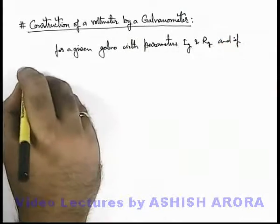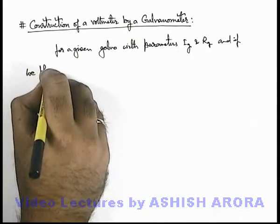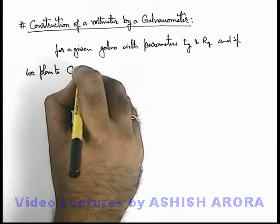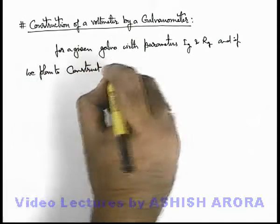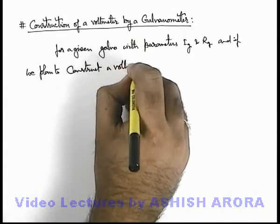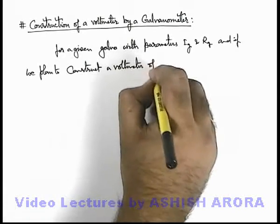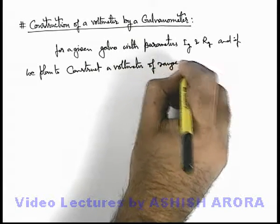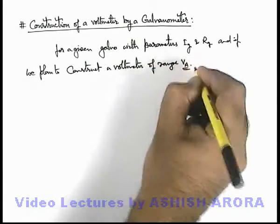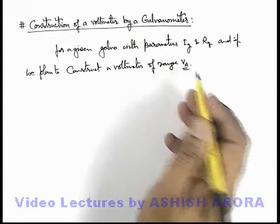And if we plan to construct a voltmeter of range V_a, then V_a is the maximum potential difference which it can measure.